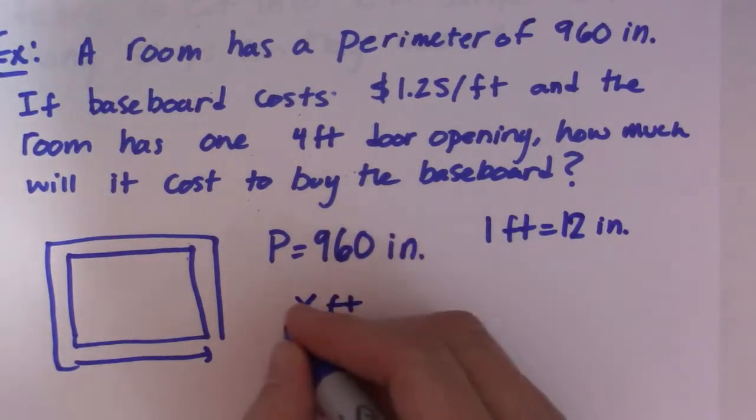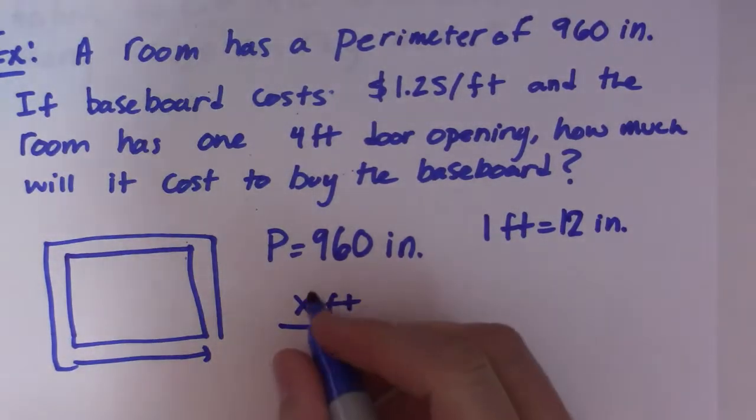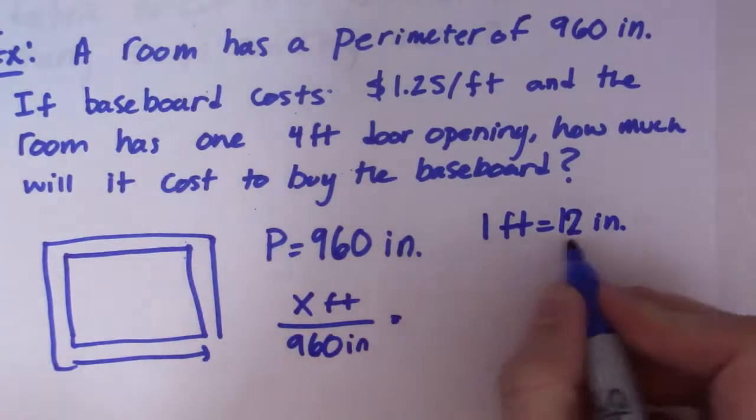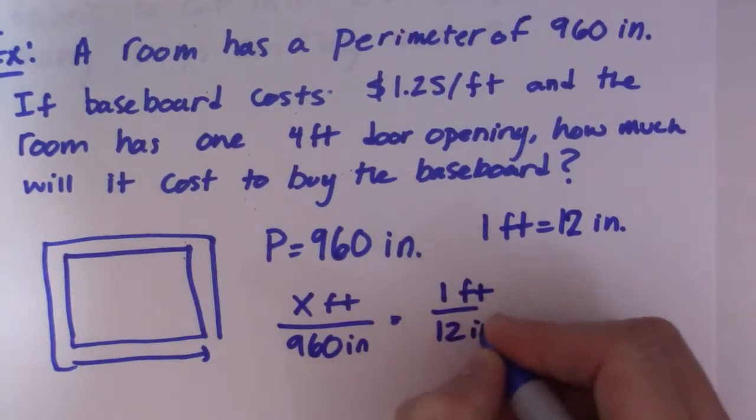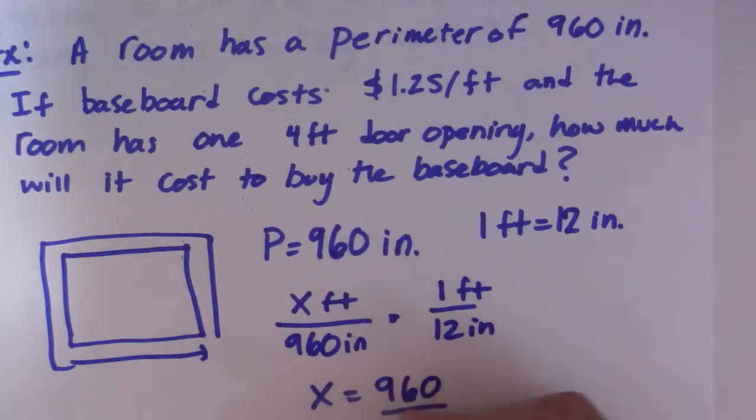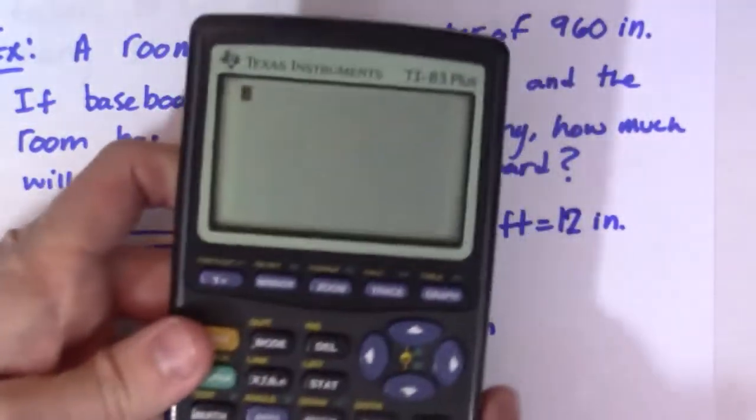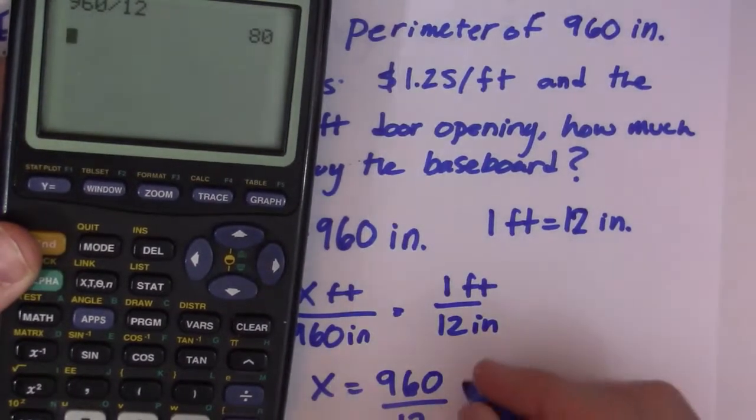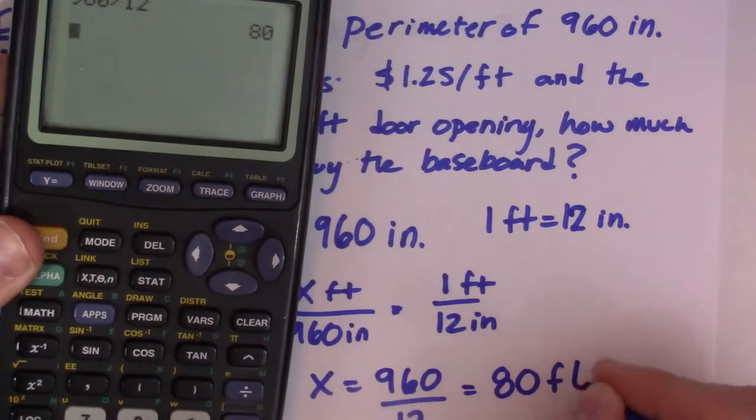That's what we're looking for, x feet, and we're given this 960 inches. Then we can use our proportion: 1 foot is equal to 12 inches. Of course we end up dividing, so we have 960 divided by 12. On my calculator, 960 divided by 12 gives me exactly 80 feet.